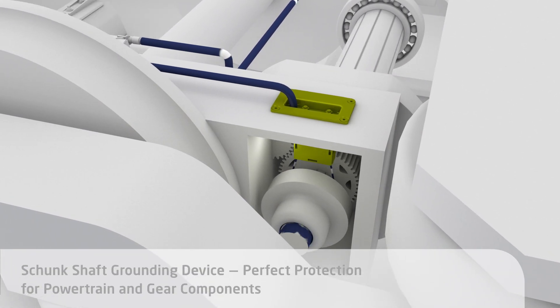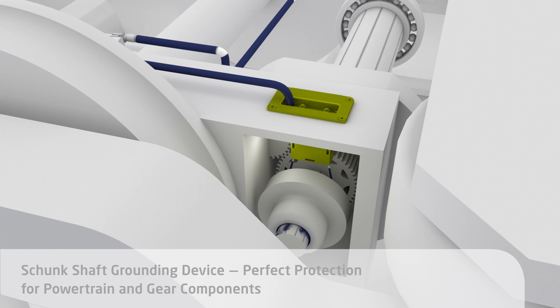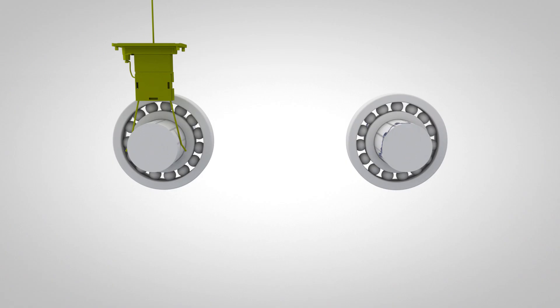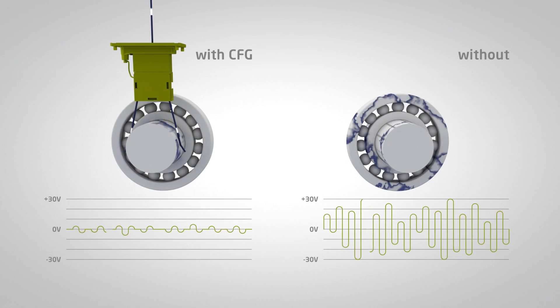Upgradeable shaft grounding directs vagrant currents away from the shaft and protects bearings from damage, even in bidirectional operation.